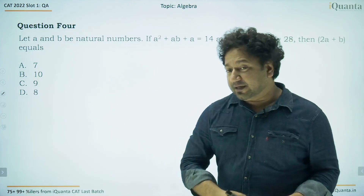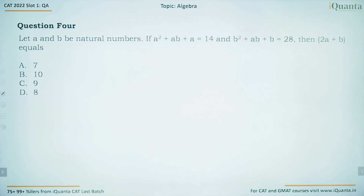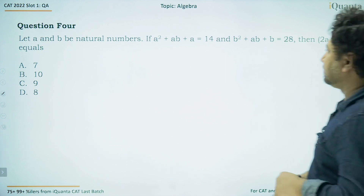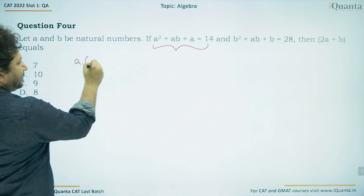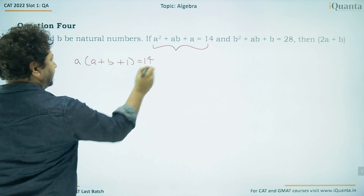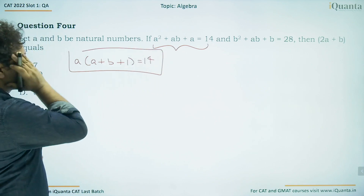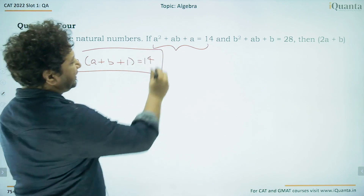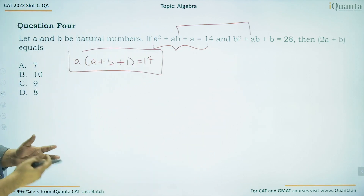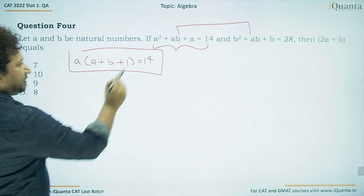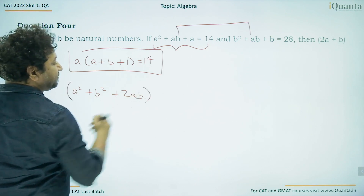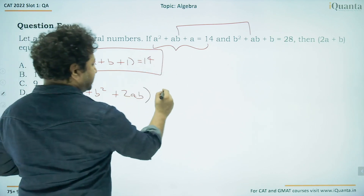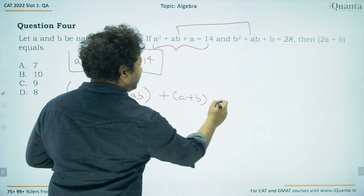Question number 4. Let a and b be natural numbers. If a² + ab + a = 14 and b² + ab + b = 28, then 2a + b equals what? Taking the first equation, we can factor out a: a(a + b + 1) = 14. Let us keep this equation for reference.